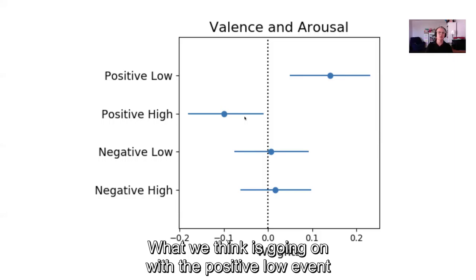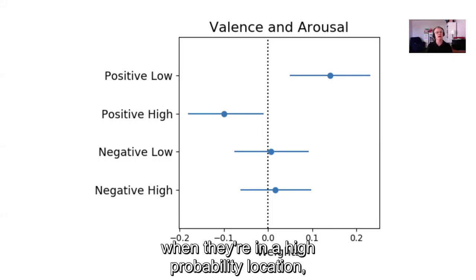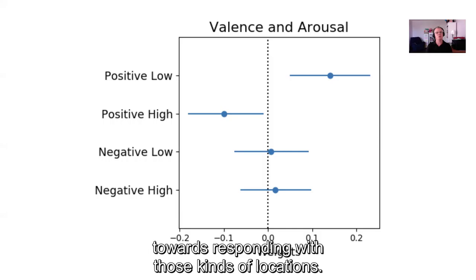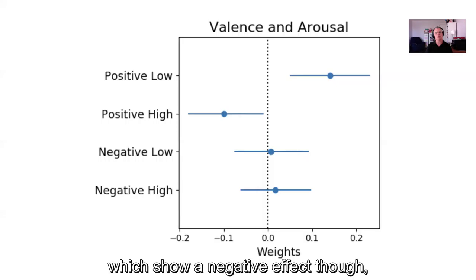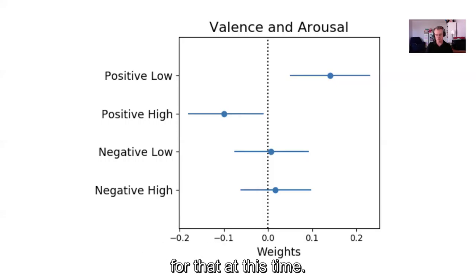This is really interesting and a little counterintuitive. We think the positive low effect occurs because people experience those emotions in high-probability locations like home, creating a bias toward responding with those locations. Why the positive high emotion would show a negative effect, however, is much more puzzling and we don't have an answer for that at this point.